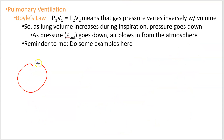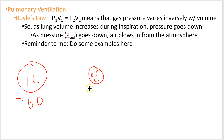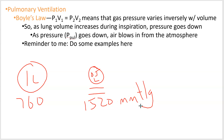If I take the same one-liter container at 760 and compress it to 0.5 liters, I have the same amount of air in a container half as big, so the pressure doubles to 1520 millimeters of mercury. You won't need a calculator on the test, but you need to understand the relationship. I'll use small numbers like ones, twos, and fours. That's Boyle's Law — now let's see what it means for your lungs.